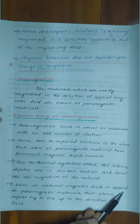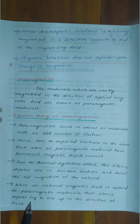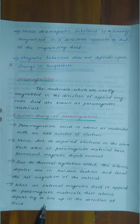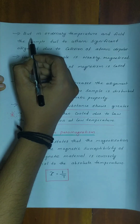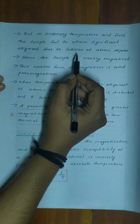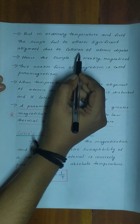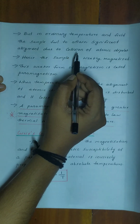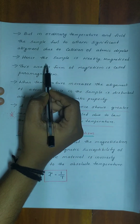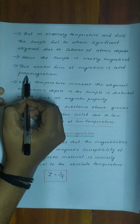When an external magnetic field is applied to paramagnetic materials, these atomic dipoles try to line up in the direction of the field. But at ordinary temperature and field strength, the sample fails to attain significant alignment due to collision of atomic dipoles. Hence, the sample is weakly magnetized. This weaker form of magnetism is called paramagnetism.